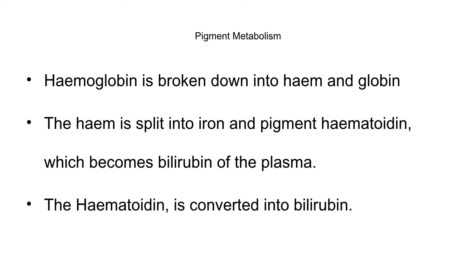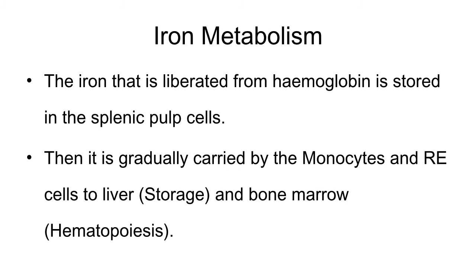Hemoglobin is broken down into heme and globin. Globin is the protein part of hemoglobin and is recycled, while the heme group is the iron-containing group. This heme group is split into iron and the pigment hematodine, which gets converted into bilirubin in the plasma.